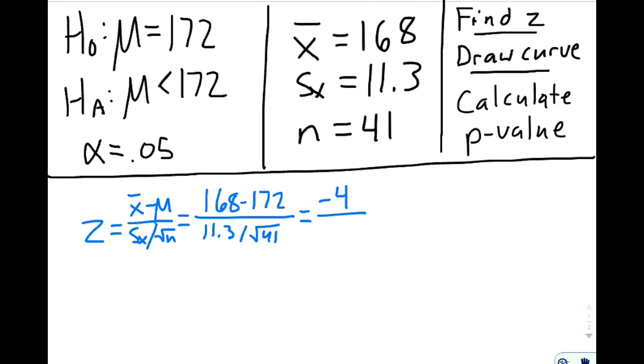If you type that in on your denominator, you're going to get a sampling standard error here of about 1.76. You take negative 4 divided by your last answer, and that's going to come out to negative 2.27 if we round it off.